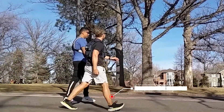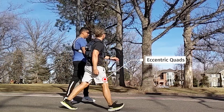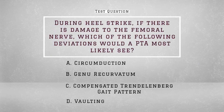First, looking at the ankle, there is an isometric contraction of the anterior tibialis to hold the ankle in neutral dorsiflexion. Moving up to the knee, the quads are eccentrically contracting as the knee slightly flexes to absorb the force of the ground moving up through the lower leg. Finally, at the hip, we see an isometric contraction of the glute max to hold the hip in slight flexion.